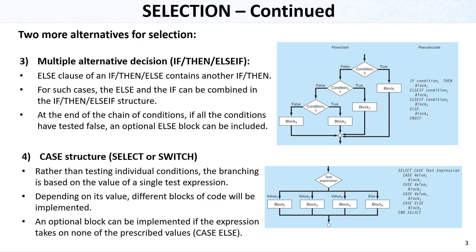As a fourth alternative for selection, we can have a case structure. Instead of if-statements, we can use select or switch. Rather than testing individual conditions, the branching is based on the value of a single test expression. Depending on its value, different blocks of code will be implemented. An optional block — case else — can be implemented if the expression takes on none of the prescribed values. In the example shown, we have a test expression with four different case values before going to the end.